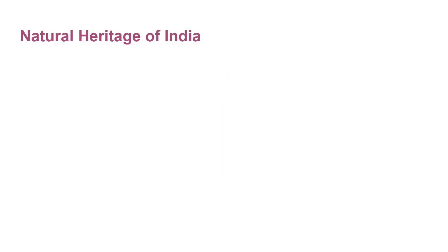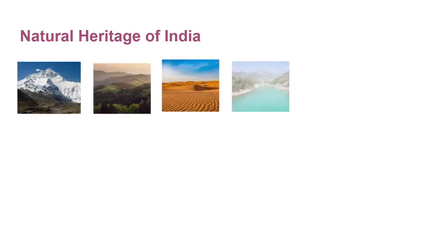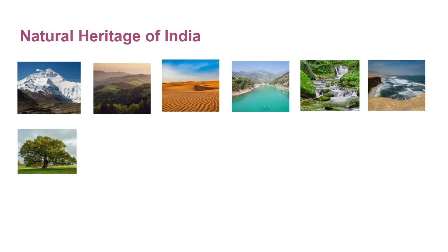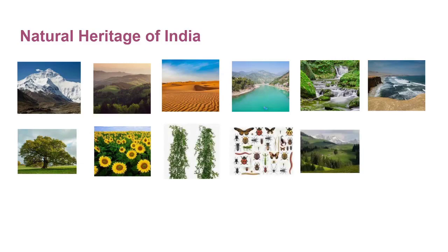Natural heritage includes features like mountains, forests, deserts, rivers, streams, seas, trees, plants, flowers, creepers, leaves, insects, landscapes, a wide range of minerals, animals, vegetation, and plants. All those things that are naturally available are our natural heritage.